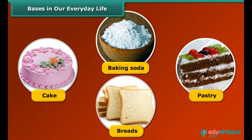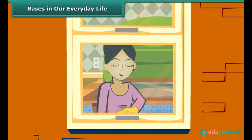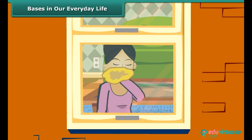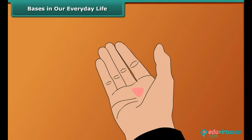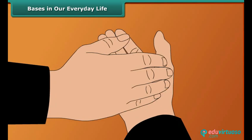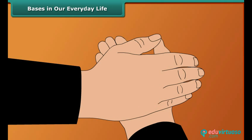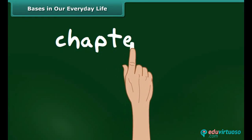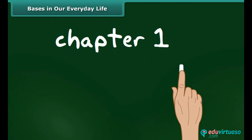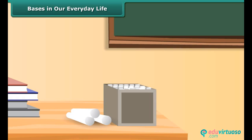When your mother cleans the window, put a drop of the cleaning solution on your palm and feel it — you will feel a slippery sensation. This is because cleaners are made of ammonium hydroxide, which is a base. We use chalk in schools for writing on the blackboard. Chalk gives a basic solution when dissolved in water — it is called calcium carbonate chemically.